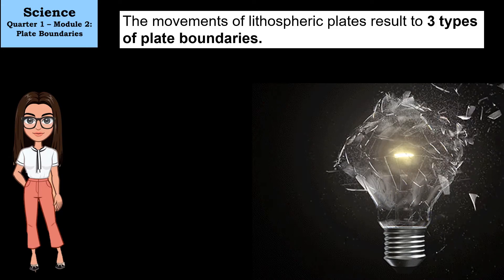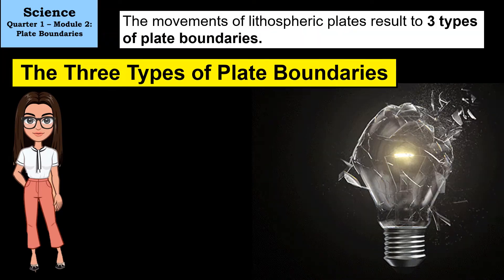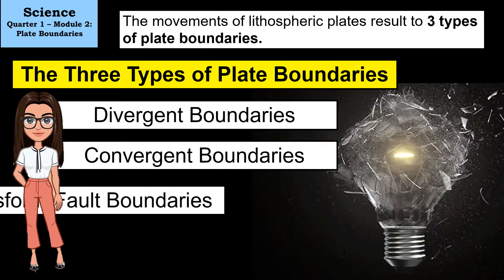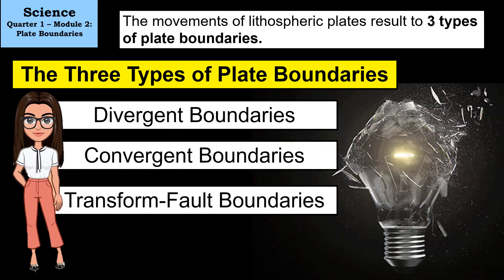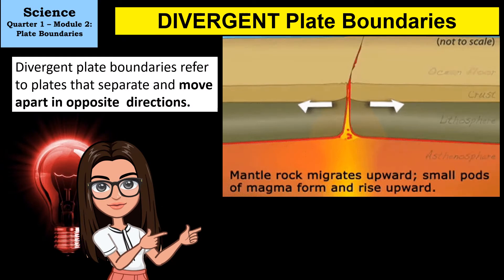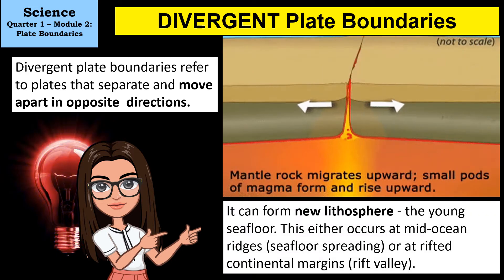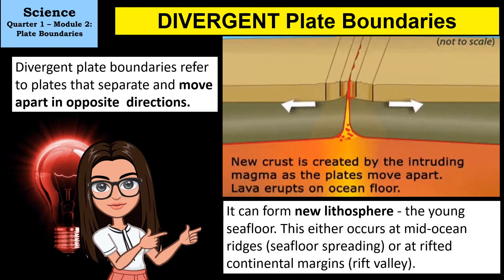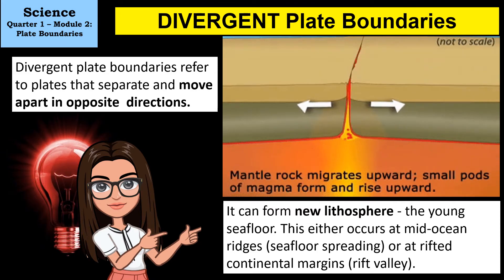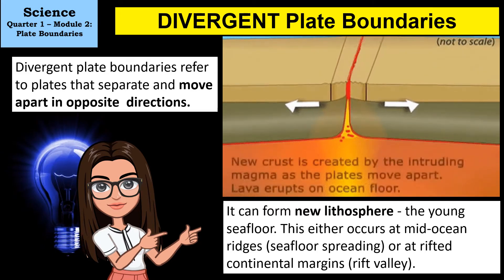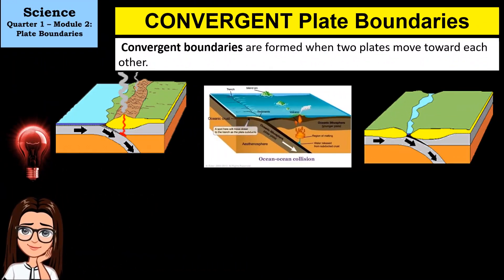The three types of plate boundaries are: divergent boundaries, convergent boundaries, and transform fault boundaries. Divergent plate boundaries refer to plates that separate and move apart in opposite directions, forming new lithosphere — the young seafloor. This either occurs at mid-ocean ridges through seafloor spreading, or at rift continental margins forming a rift valley.